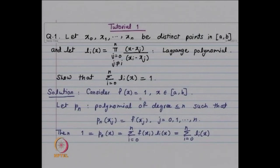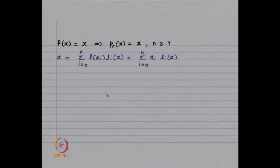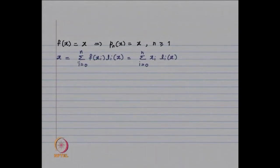Now, if instead of f(x) = 1 we look at f(x) = x, then for n ≥ 1, p_n will equal the function itself, giving us summation of x_i l_i(x) for i from 0 to n equals x. Similarly, for n ≥ 2, summation of x_i² l_i(x) equals x², and so on.